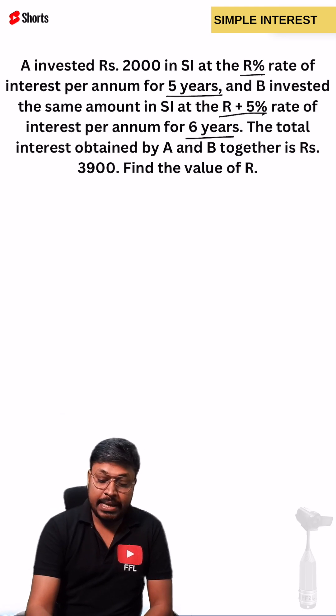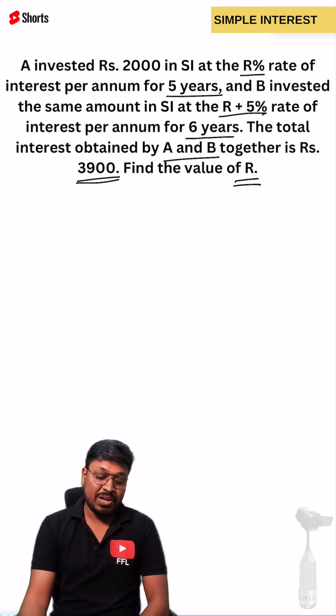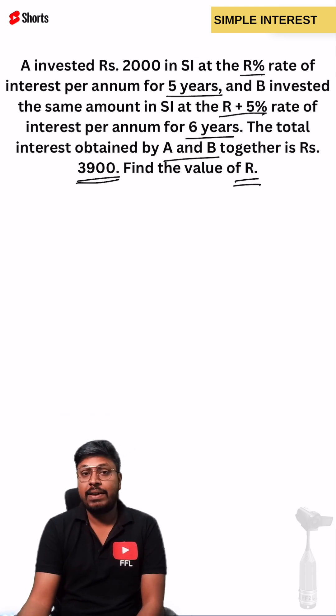The total interest obtained by A and B together is 3900. Find the value of R. Our target is to find the interest rate. Both principal amounts are the same. Interest is different: one is R, second is R plus 5.